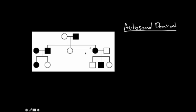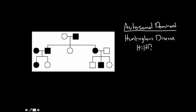Once we determine this is autosomal dominant, we want to figure out what genotypes these people have. Since this is autosomal dominant, I'm going to use Huntington's disease, because it is an autosomal dominant disorder. Since it's dominant, the people who are shaded in have Huntington's disease. Because it's dominant, in order to have it they have to have at least one dominant allele. So big H equals Huntington's disease and little h equals normal. Everybody who is shaded in has at least one capital H.